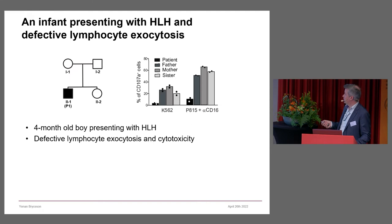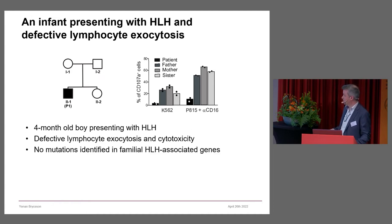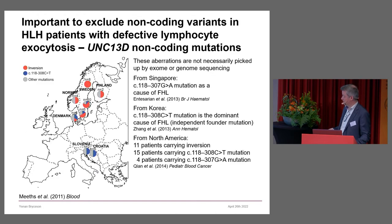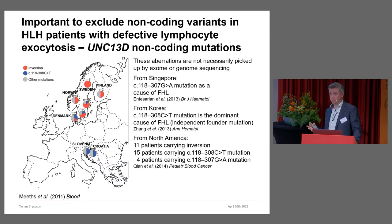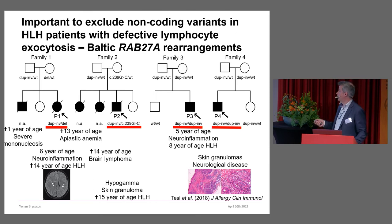A few years ago we were contacted by Finnish colleagues who had a four-month-old boy presenting with HLH. We found defective exocytosis and lymphocyte cytotoxicity in this individual, really suggesting a defect in the exocytic machinery. However, no mutations were identified in any of the familial HLH-associated genes. In these cases we're very careful to also check protein expression, because we've uncovered several non-coding mutations that explain more than half of the infant HLH cases in Sweden and the Nordic region — including inversions in MUNC13-4, intronic mutations disrupting gene expression, and in the Baltic area an atypical Griscelli syndrome RAB27A rearrangement.